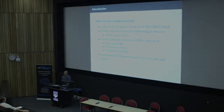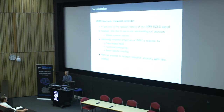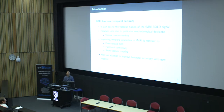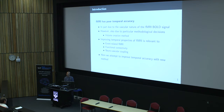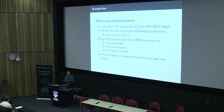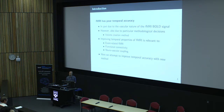fMRI has a relatively poor temporal resolution and poor temporal accuracy in the detected signal. This is partly due to the vascular nature of the fMRI signal — the BOLD signal is measured as a vascular signal. However, part of the temporal inaccuracy is also due to particular methodological decisions that we take in the fMRI data analysis pathway.